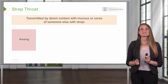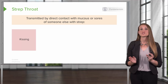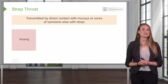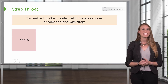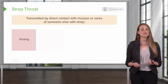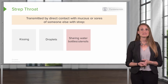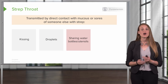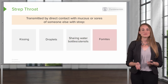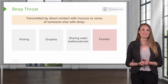Strep throat is transmitted by direct contact with mucus or sores of someone with the strep bacteria. This can be via kissing, droplets, sharing water bottles and utensils, or from fomites — inanimate objects covered in the strep bacteria.